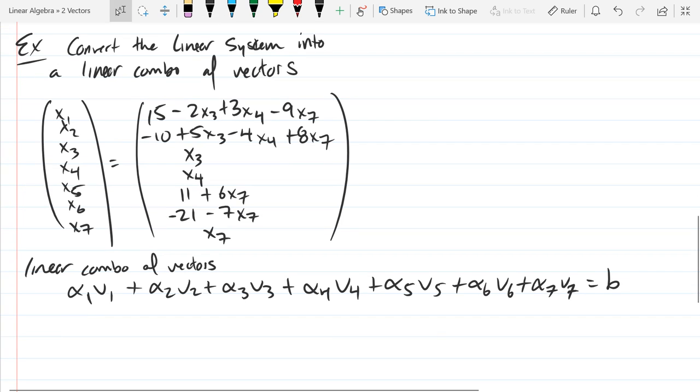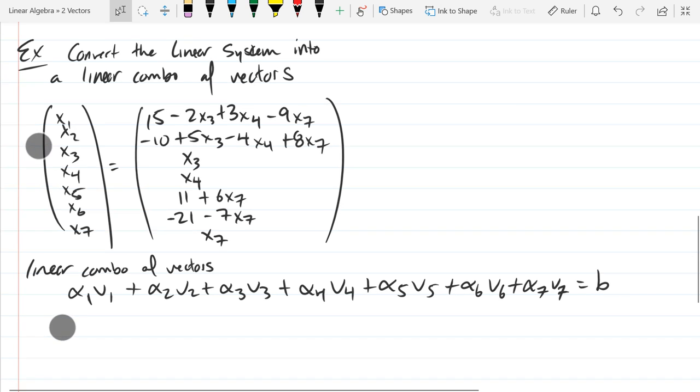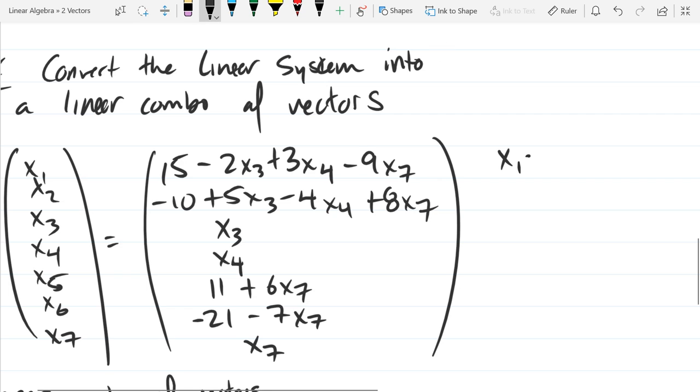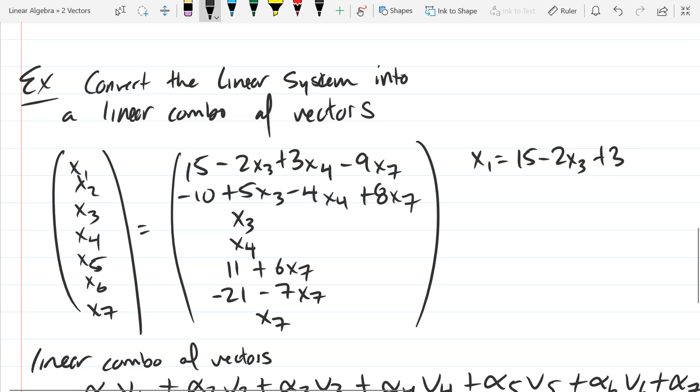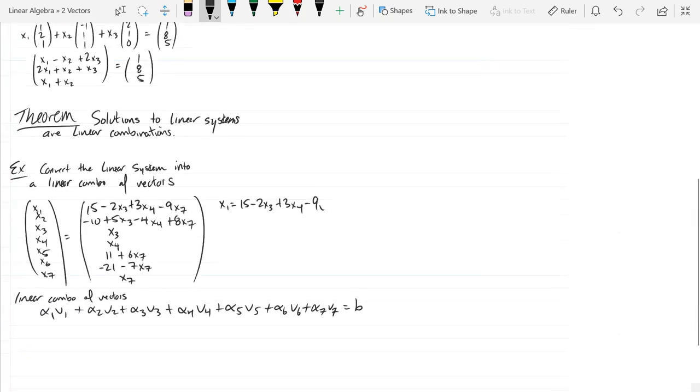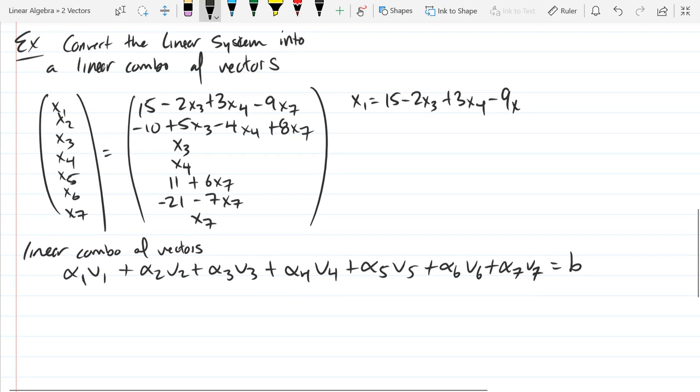Our linear system is in a weird form. Let's write out the seven equations, but we want to order them in numeric order and have our constants on the other side. I'm going to do this for equation 1, and then you're going to do this for the other six. In equation 1, x1 equals 15 minus 2x3 plus 3x4 minus 9x7. So that's our first linear equation.